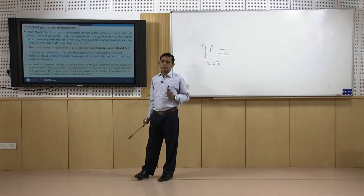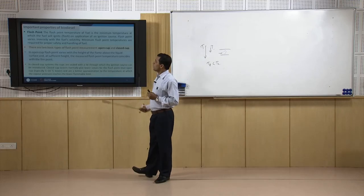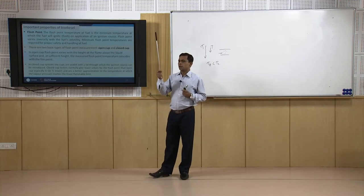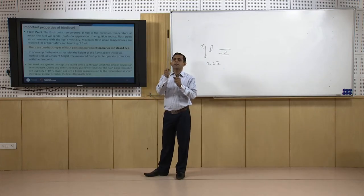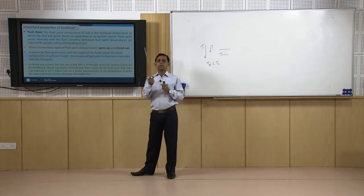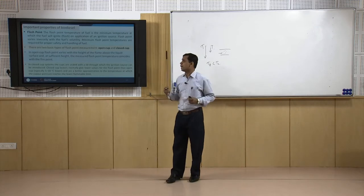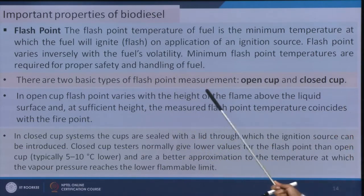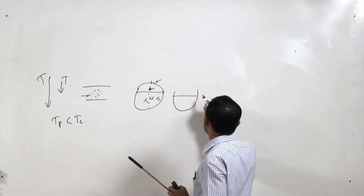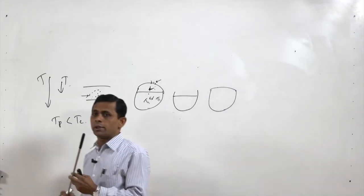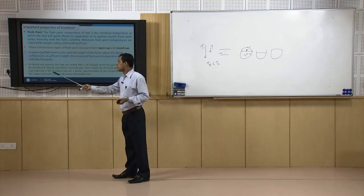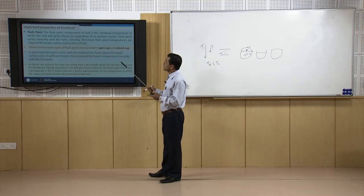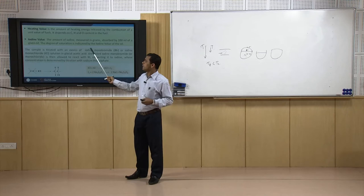Flash point is another important property of liquid fuels. When the fuel is heated and an open flame is momentarily applied above it, there will be a momentary flash — that temperature is the flash point. If the temperature is raised further, fire will catch — that is the fire point. Two methods measure flash point: closed cup and open cup. The closed cup gives a result 5–10°C lower than the open cup method for the same sample.